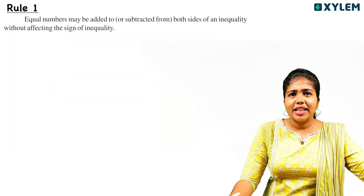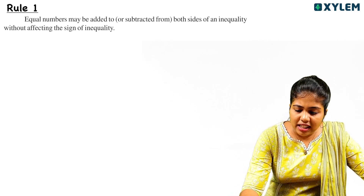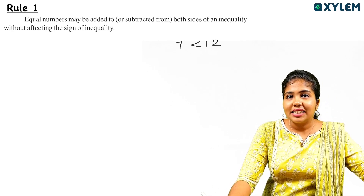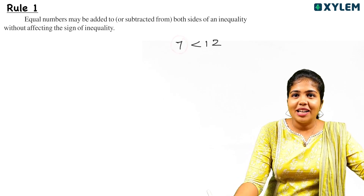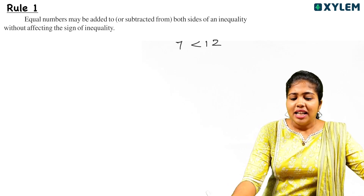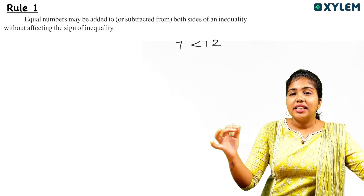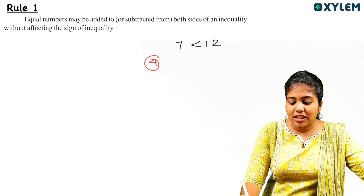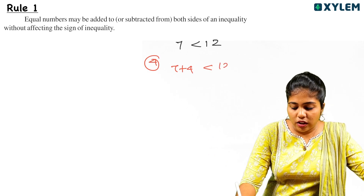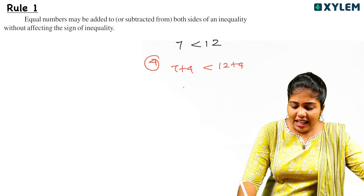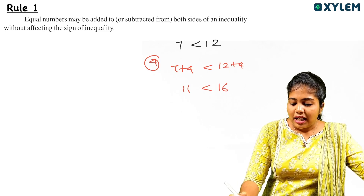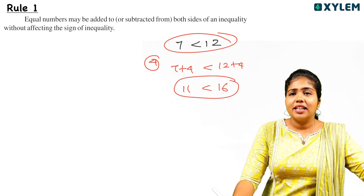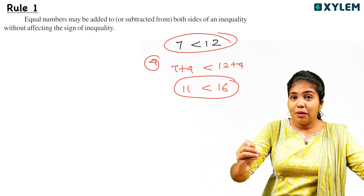You will see that 7 and a half is equal to 12 and a half. When you are equal, this number is less than or equal to 7 and a half. If you are equal to 12, you will see this number is equal on two sides. It's 7 plus 4 equals 11, and 12 plus 4 equals 16. This statement says 7 is less than 12, and in this case, 11 is less than 16.